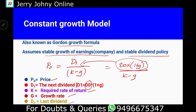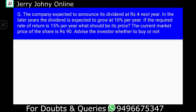This is the formula for calculating the constant growth model. Now let's look at a problem. The company is expected to announce its dividend at rupees 4 next year — that is D1. In later years, the dividend is expected to grow at 10% per year. The required rate of return is 15%.